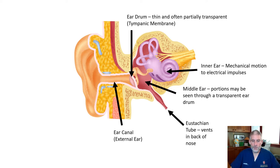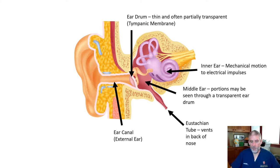Then finally is the eustachian tube. The eustachian tube is the venting system for the middle ear cavity. For the eardrum to work properly, it's important that the pressure on both sides of the eardrum be the same. The external portion of the ear is connected to the outside world via the ear canal. The eustachian tube connects the middle ear portion — the other side of the eardrum — with the back of the nasal cavity. In a properly functioning eustachian tube, it keeps the pressure the same on both sides and prevents discomfort associated with a pressure difference across the eardrum.